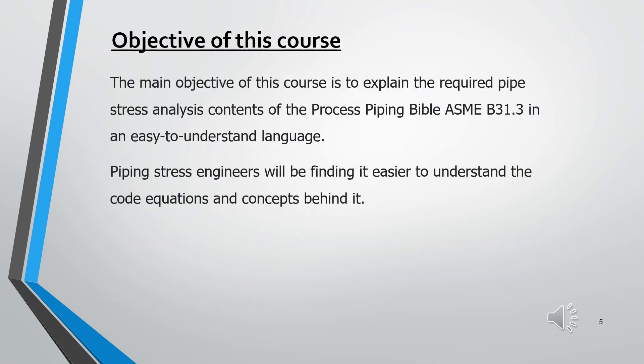The main objective of this course is to explain the required pipe stress analysis contents of the process piping bible, ASME B31.3, in an easy-to-understand language. ASME B31.3 is known as the bible of process piping — it covers everything from design through commissioning, giving all guidelines and requirements for design, fabrication, inspection, and testing of piping systems. Piping stress engineers will find it easier to understand the code equations and concepts behind them.